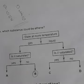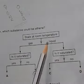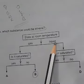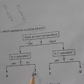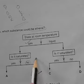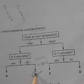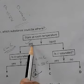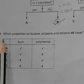Question 39: In the diagram, which substance could be ethene? Ethene is in the gaseous state. It is not saturated — compounds with C=C or C≡C bonds are unsaturated, while those with only C–C single bonds are saturated. Ethene contains a double bond, so it is unsaturated. Option B is the answer: gaseous state and unsaturated.